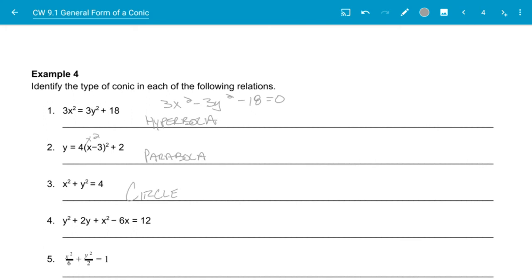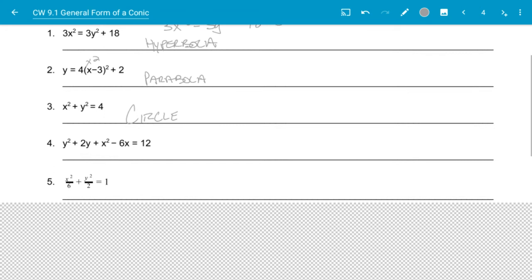Remember, if I have the same signs but different coefficients, then that is just an ellipse. Let's take a look at number four.